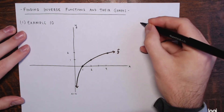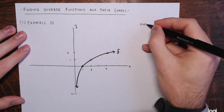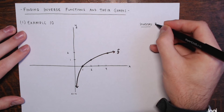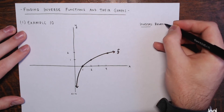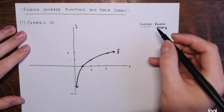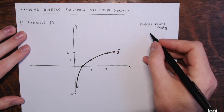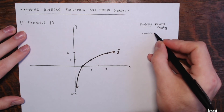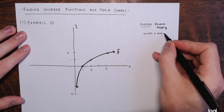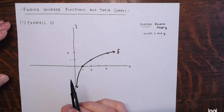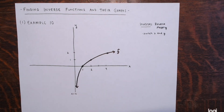For inverses, it's just a reverse mapping — you switch x and y coordinates. The domain of a function becomes the range of the inverse, and the range of a function becomes the domain of the inverse.